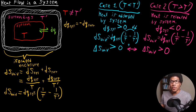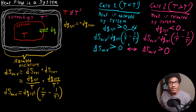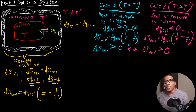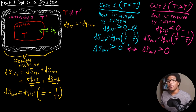Regardless of which case we're looking at, we're still in accordance with the second law of thermodynamics either way. If the system is absorbing heat, the heat transfer is positive and (1/T − 1/T prime) is also positive, giving delta S universe greater than zero. If the system is releasing heat, both terms are negative, and their product is still positive. This shows that regardless of which direction heat is transferred in a system, we're always in agreement with the second law of thermodynamics.